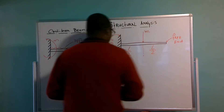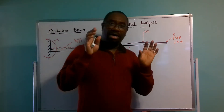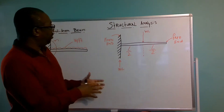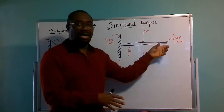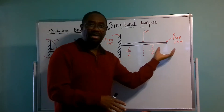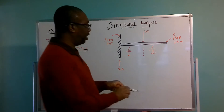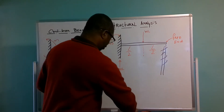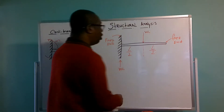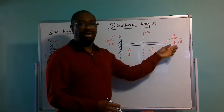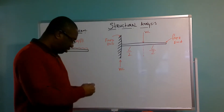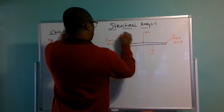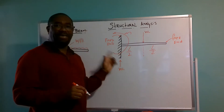A cantilever is a structural member on a construction project or a bridge where one end is always fixed and the other end is free. On the free end, there is no vertical support. Because we have one end that is fixed, you are going to end up with what is called a moment — we call that a fixed end moment.